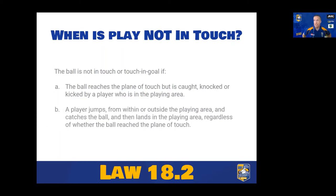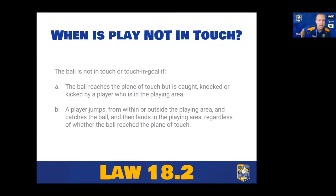If a player jumps from within or outside the playing area, catches the ball in mid-flight, and lands inside the field of play, the ball is still alive — we're not in touch. It doesn't matter where they start from; they can start from row Z in the grandstand. An excellent example of a player knowing the law was Jordie Barrett in the Chiefs versus Hurricanes before the lockdown, who pulled it off from a Chiefs penalty kick, starting about four or five meters outside the field of play — ran, leapt, jumped, caught the ball in mid-air, landed inside the field of play, play on, and prevented the Chiefs' line-out.